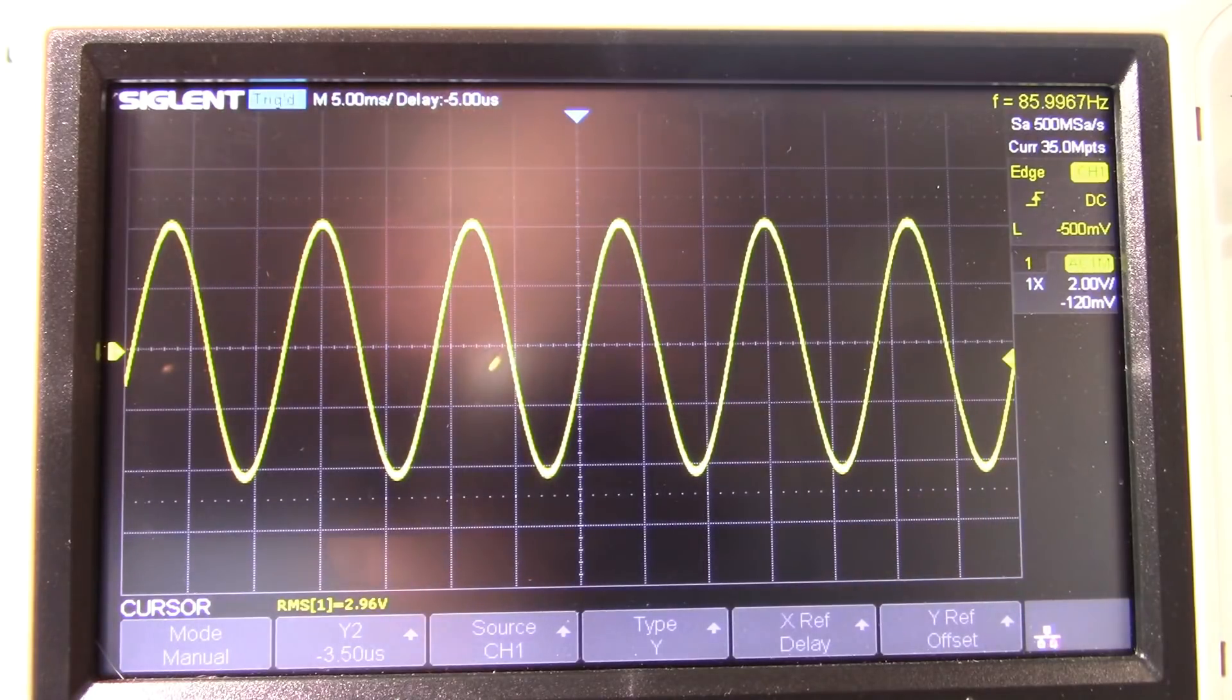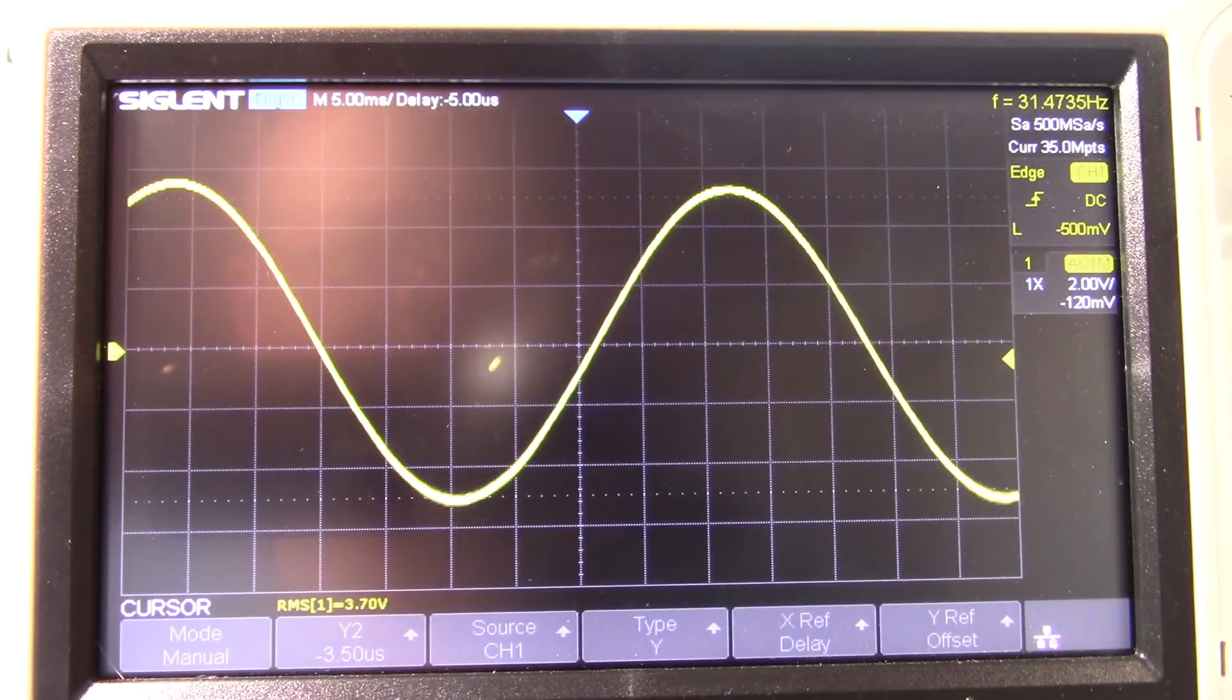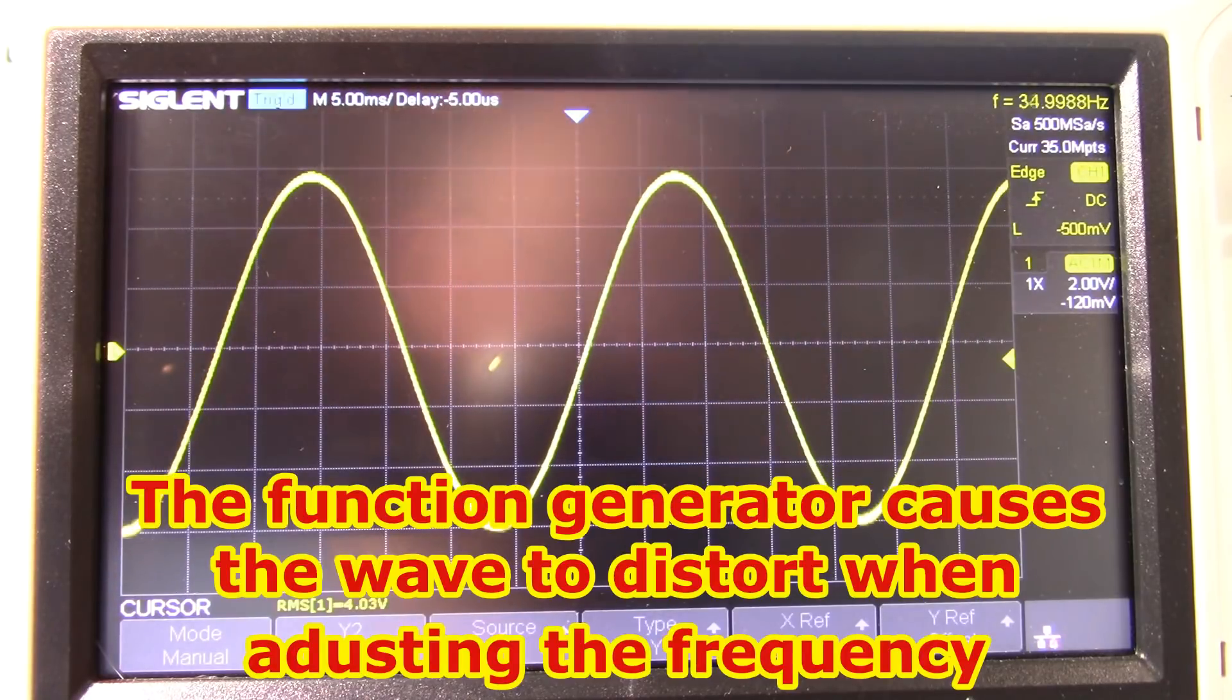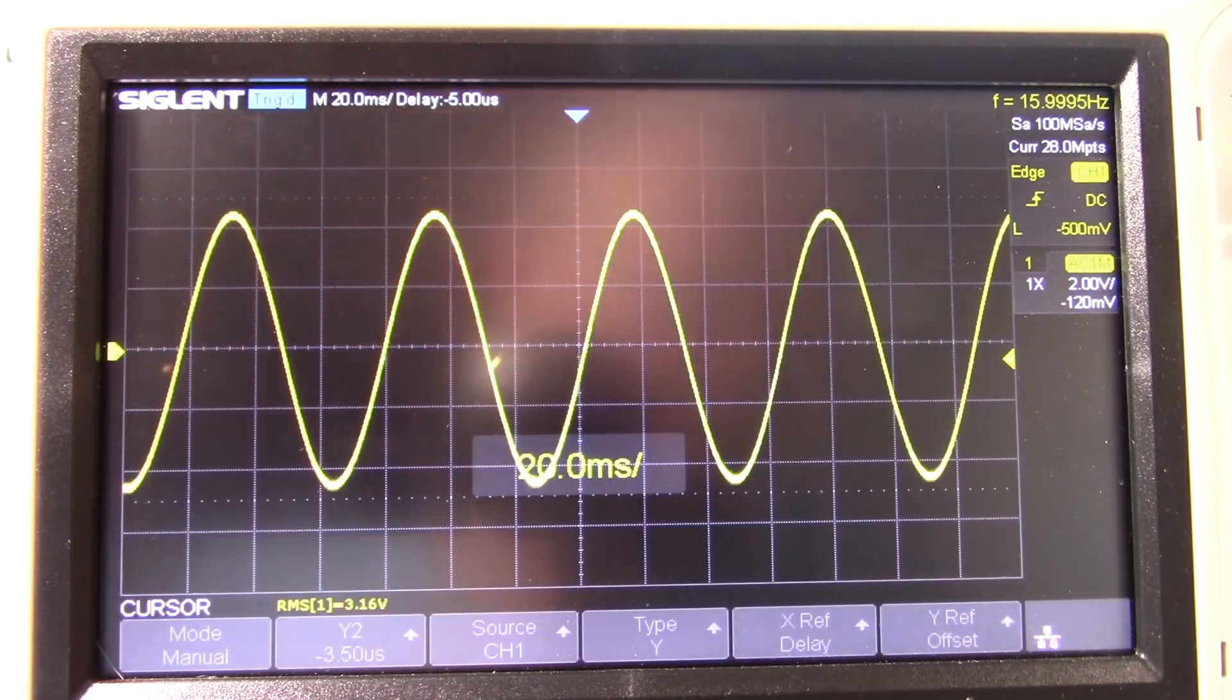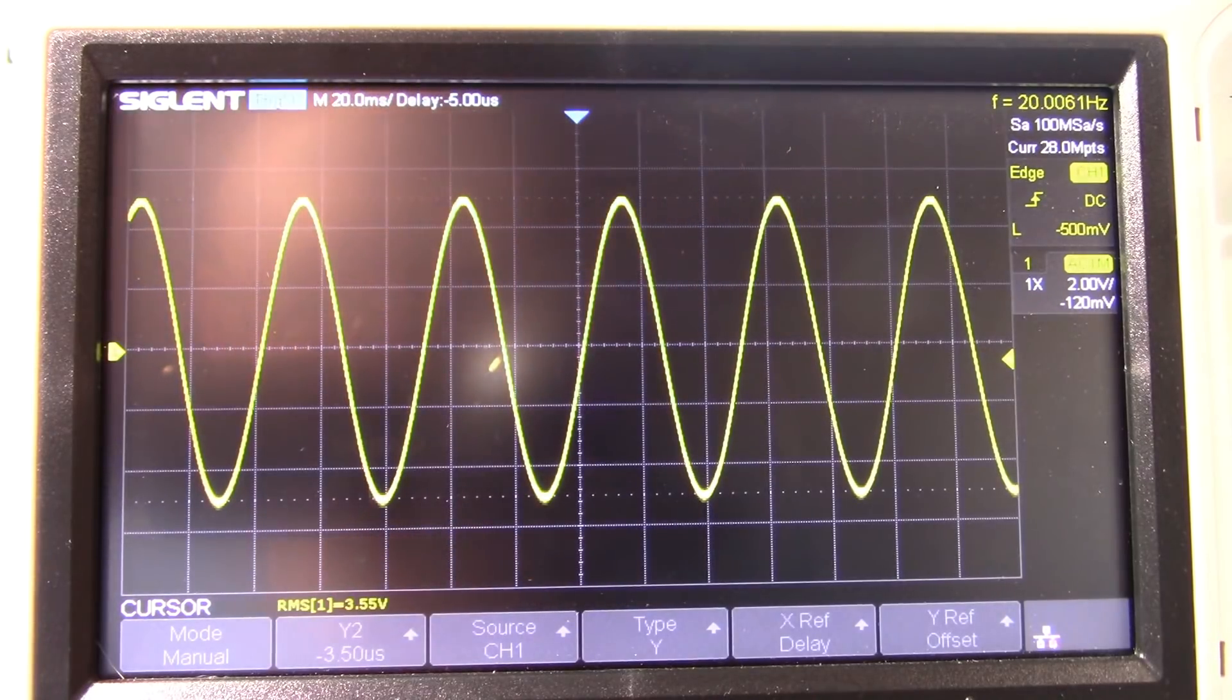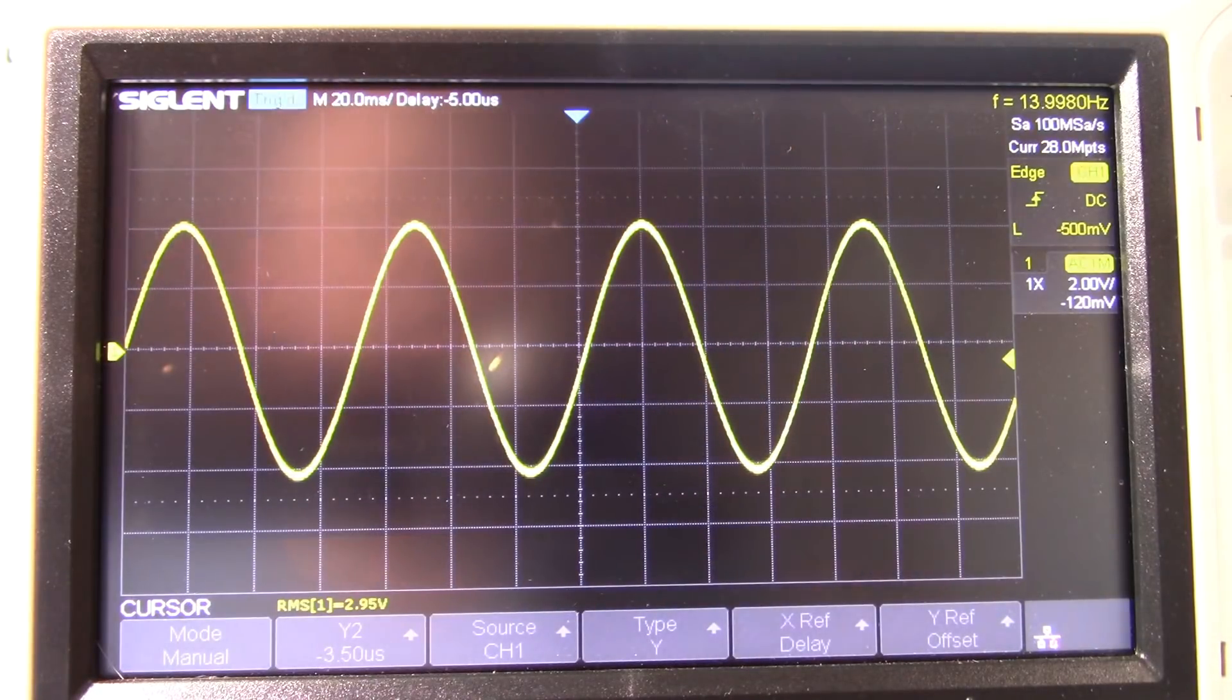Now let's see how low a frequency it will handle before it hits 2.95 volts again. It's starting to roll off at 35 hertz. Let's go to 20 hertz, it's dropped down to 3.56. At 14 hertz, it's not completely flat at the low end, it does roll off before it gets to 20 hertz. You'd have to have pretty good speakers to notice that.